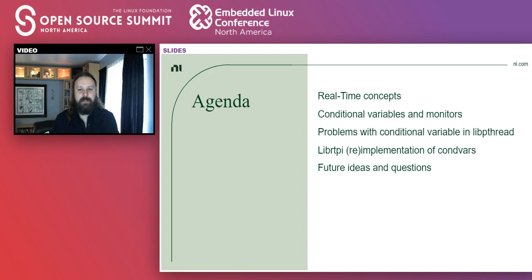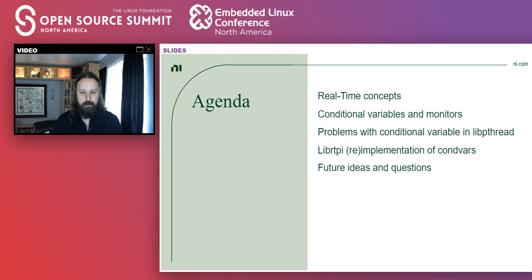In terms of agenda for today, I'll very quickly cover just some real-time concepts that are relevant, and then some details about conditional variables and the associated concept of monitors. Then I'll go more in depth into the problems we've encountered with conditional variables in the libpthread implementation, our re-implementation in LibRTPI, and then I'll close with some future ideas and questions. Please submit your questions in the chat window — I'm doing this presentation live, and if we don't have time I'll make sure we continue in the Slack channel.